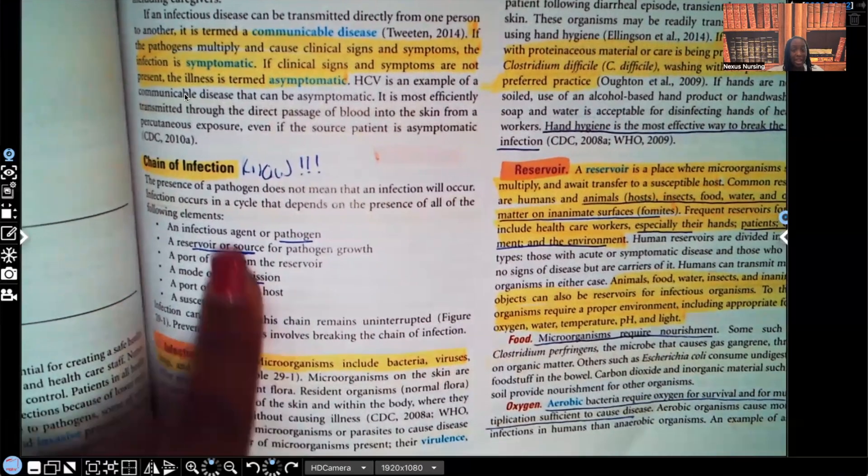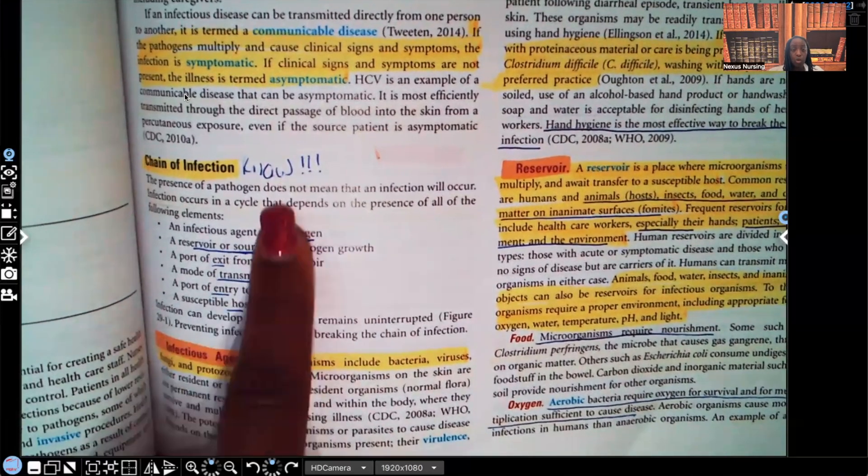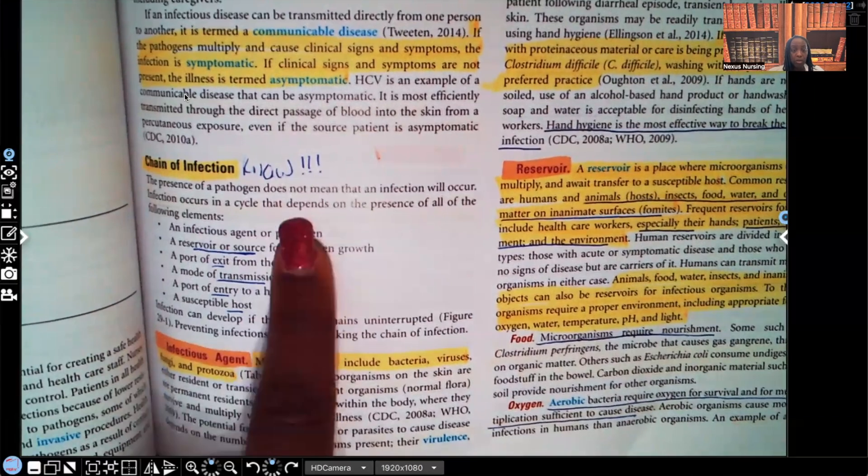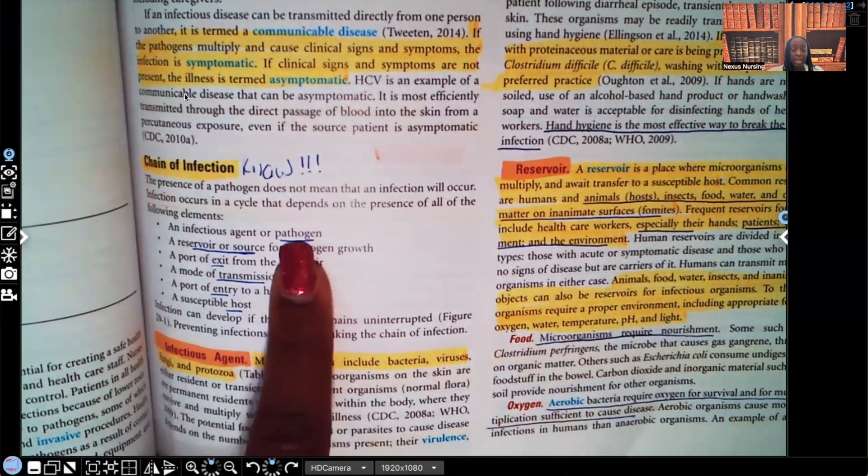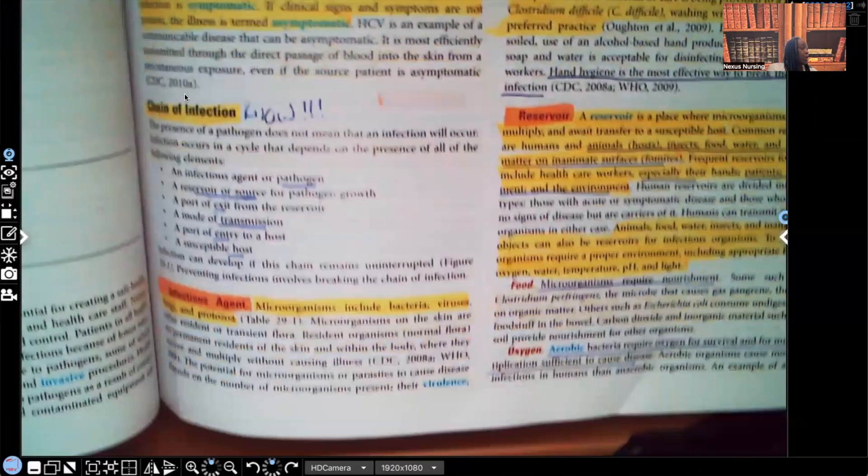That would be your bacteria or your fungus or your virus or whatever that microorganism is. So you have to have an infectious agent. You have to have a reservoir or source for pathogen growth, such as water that's not moving. That's a great source for pathogen growth. We'll talk about that in a second. You have to have a port of exit from the reservoir. You have to have a mode of transmission. Then you have to have an actual entry into the host and this host has to be susceptible. Now let's start with infectious agent.